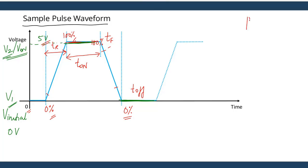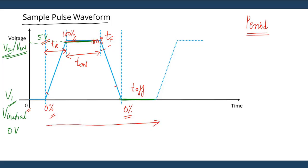Finally, let's talk about the parameter period. All pulse waveforms are periodic in nature — that is, they repeat themselves at regular intervals of time. This entire duration is called the period of the waveform. From this point to this point is the period, and after this point the waveform repeats itself. These intervals are called periods, and one interval is one period of the waveform.